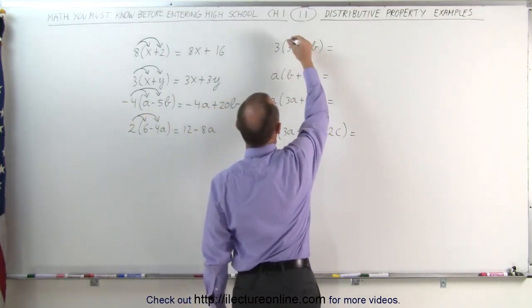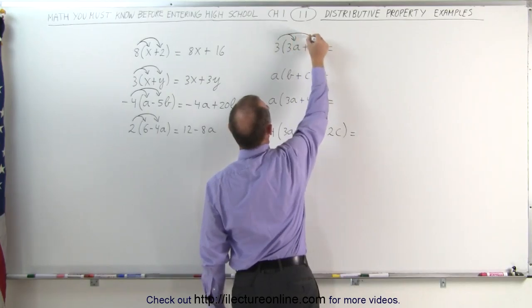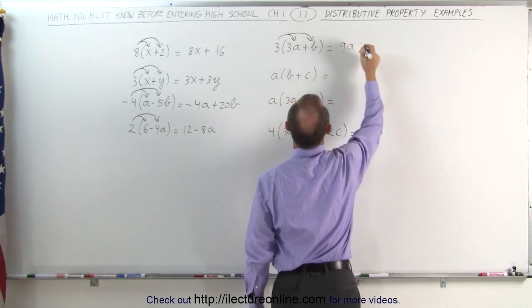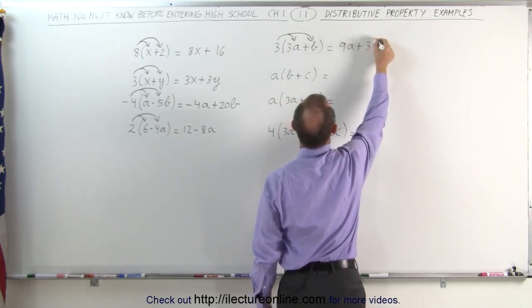Here we're going to distribute the three over the three a, and the b. Three times three a gives me nine a, and three times b gives me three b, and they're both positive.